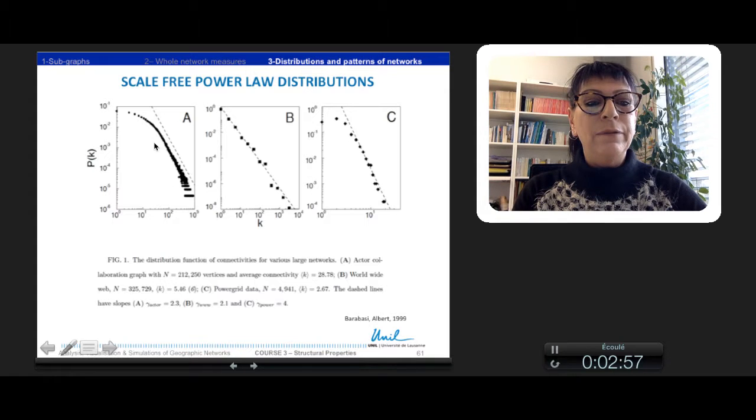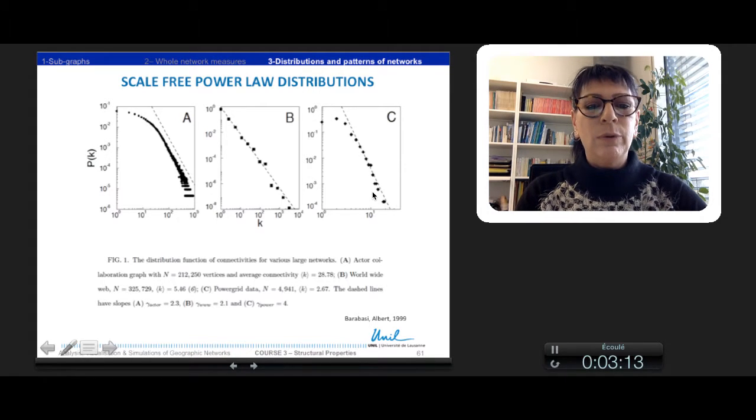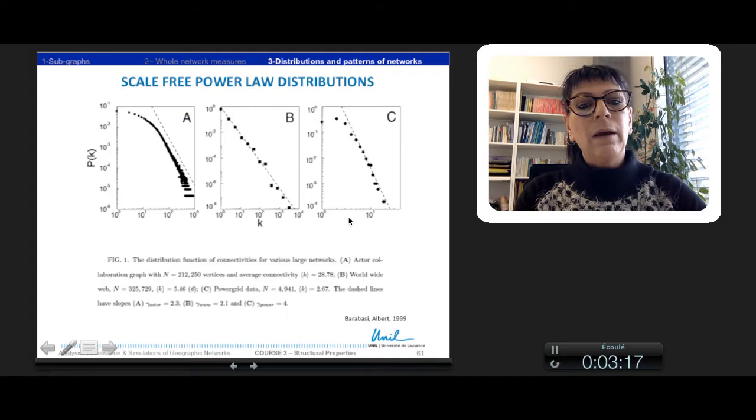They all can show some scale-free distribution. The scale-free power-law distribution is defined by the probability P that the vertex in a network interacts with k other vertices.